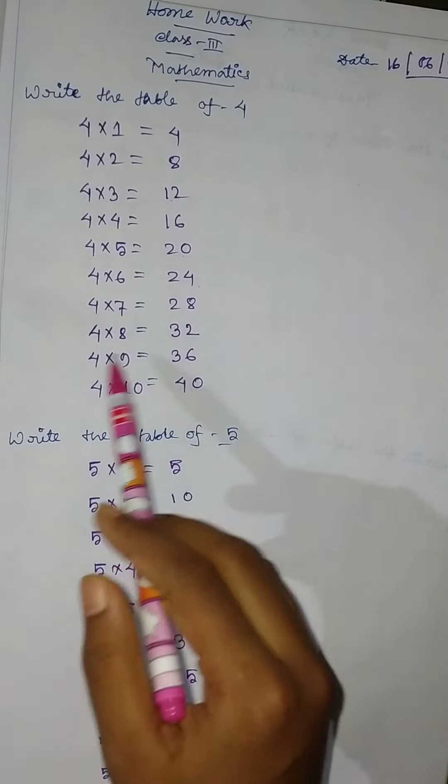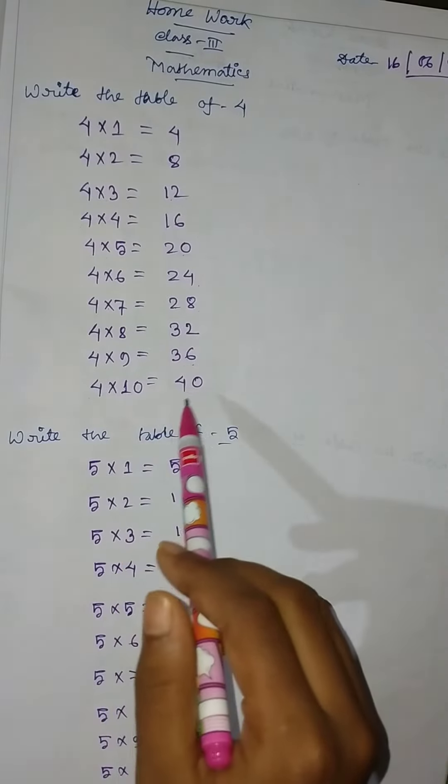4 into 8 equal to 32, 4 into 9 equal to 36, 4 into 10 equal to 40, okay.